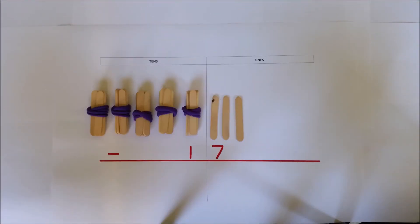This is the decomposition method for subtraction with an emphasis on place value. I'm going to solve 53 take away 17.